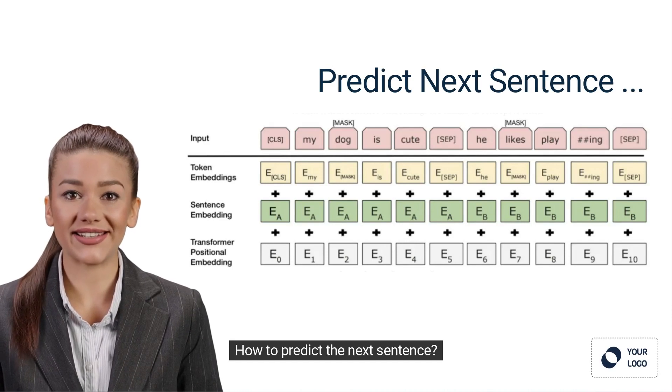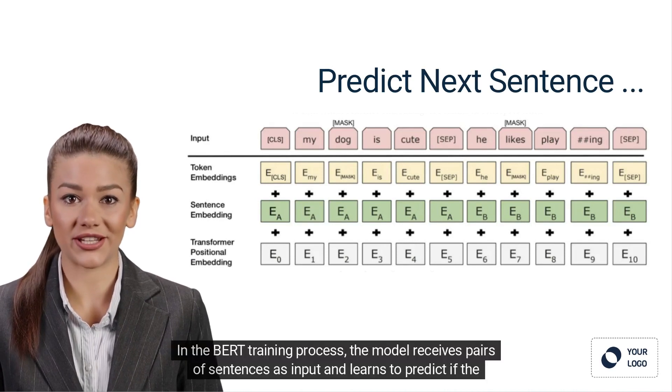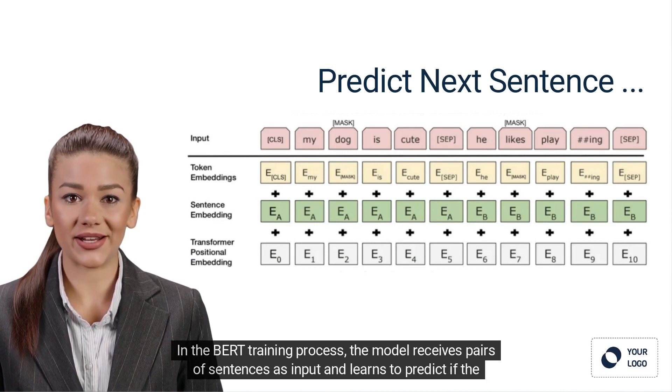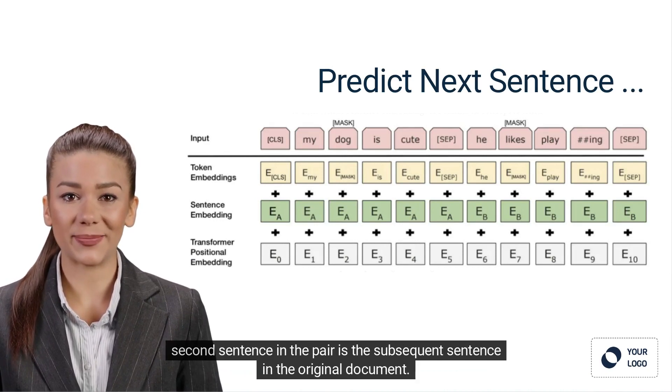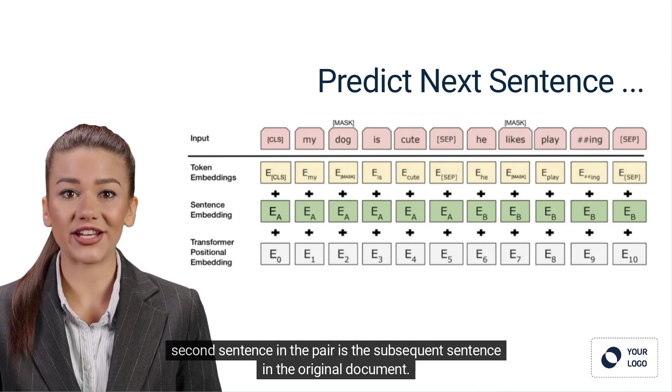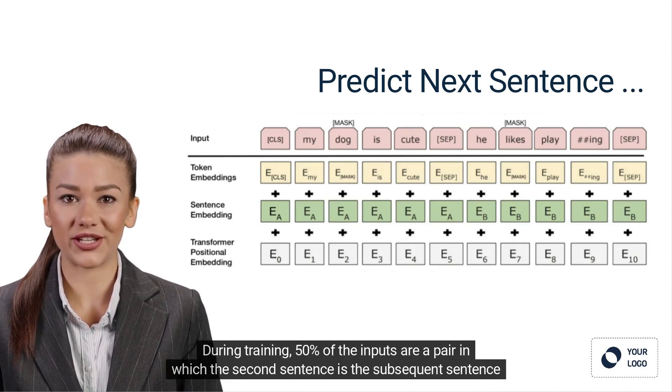How to predict the next sentence? In the BERT training process, the model receives pairs of sentences as input and learns to predict if the second sentence in the pair is the subsequent sentence in the original document. During training,